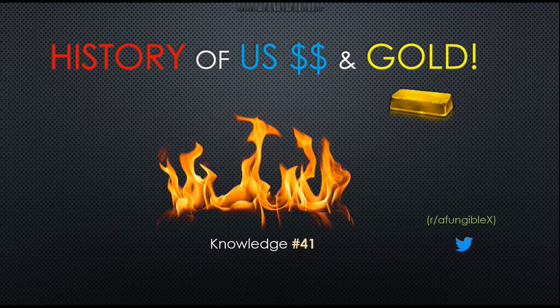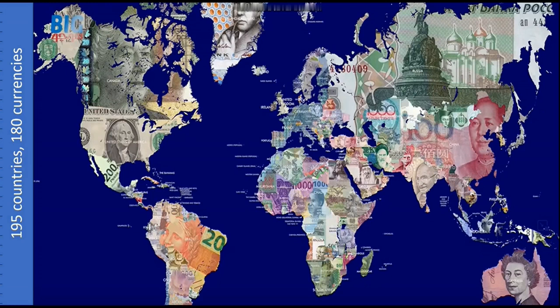It's important for us to understand the history of things. This world map shows 195 countries using about 180 different national currencies, with the US dollar at the helm. All other national currencies are pegged to the US dollar, meaning the US controls the other currencies of the world in a significant way.